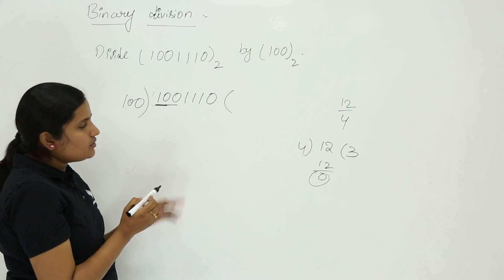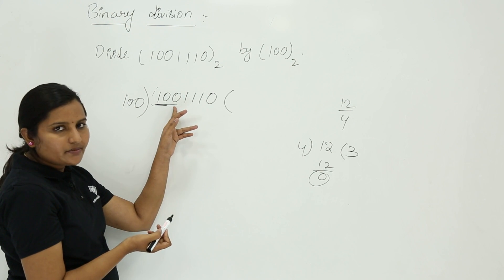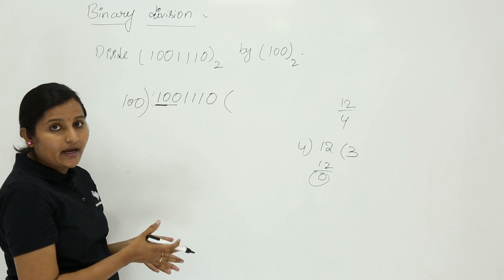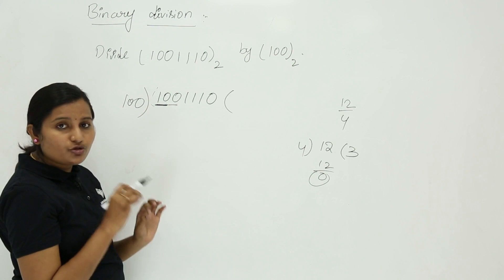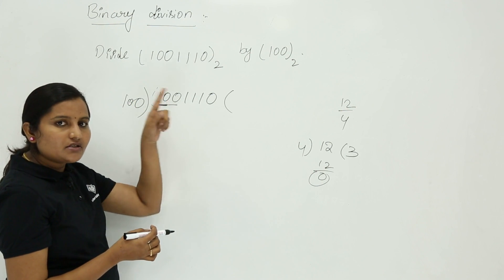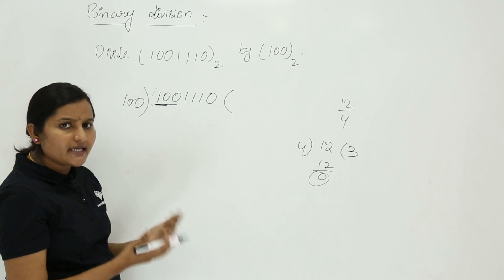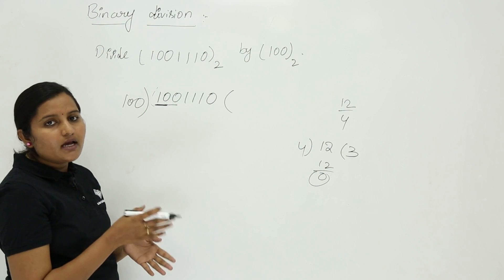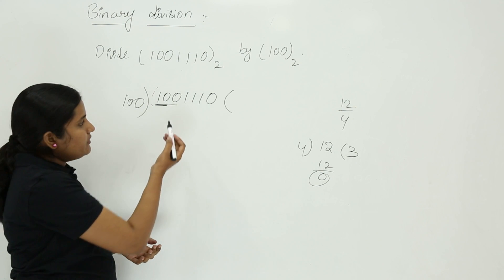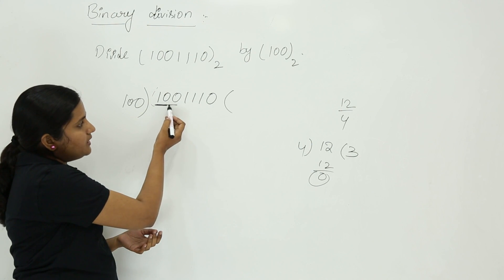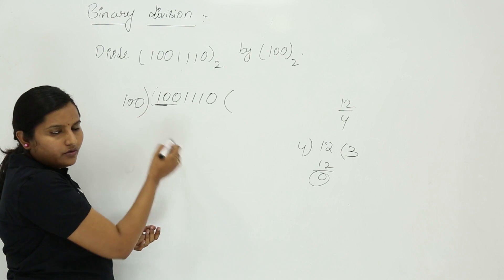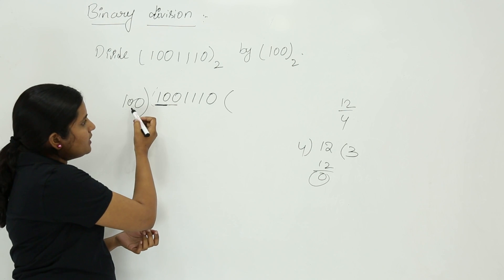When we consider another digit, the value changes. In one zero, the value of one is different than in one zero zero — a three-bit binary. The place value of one changes, so the value assigned to it also changes. Now considering three bits, the value of this one becomes four, so this is equivalent to four and we can perform division.